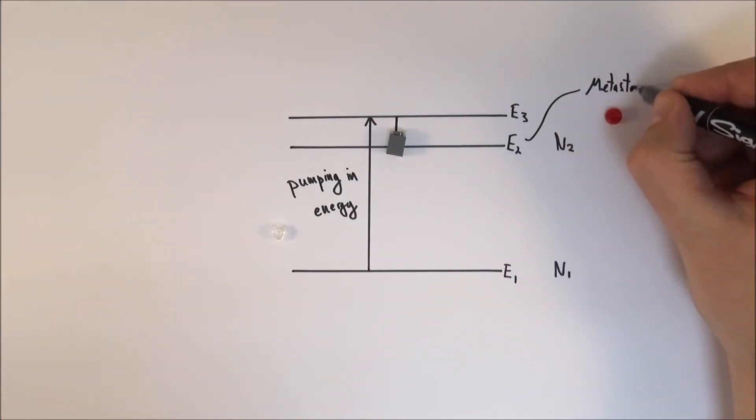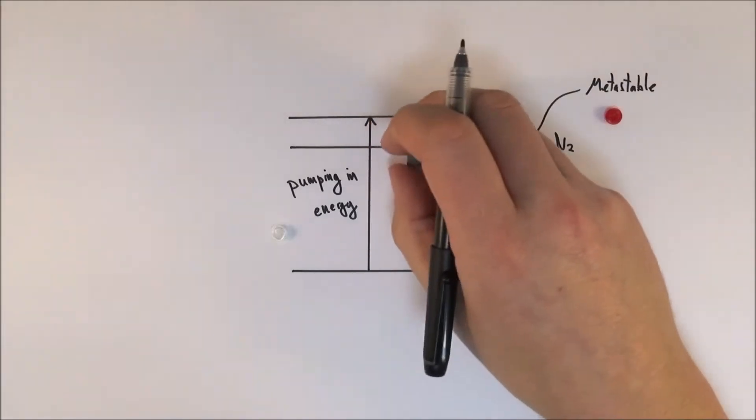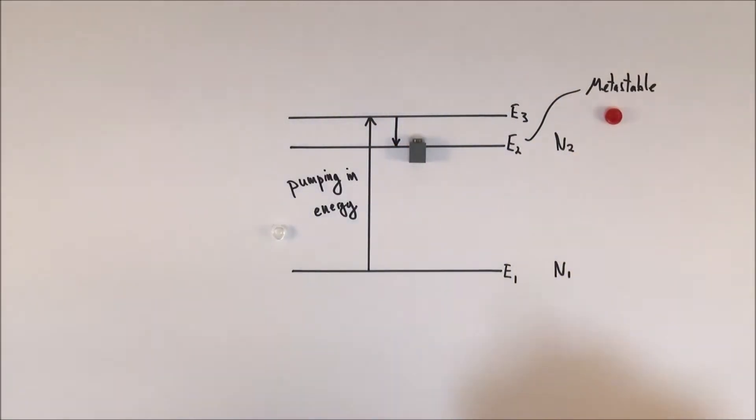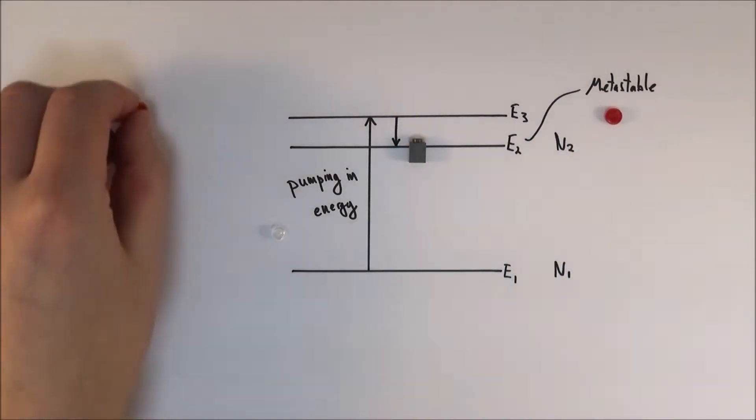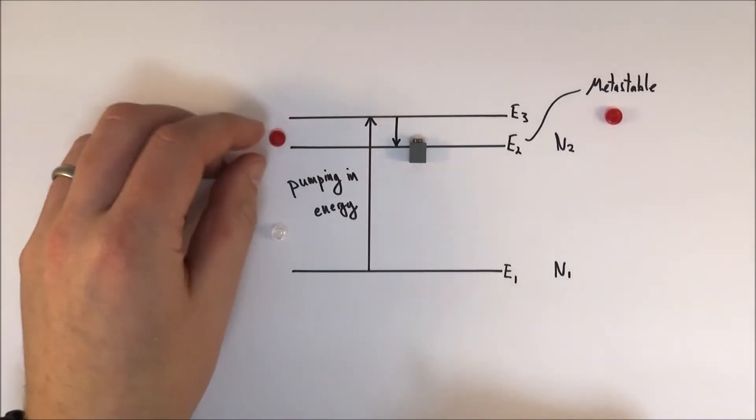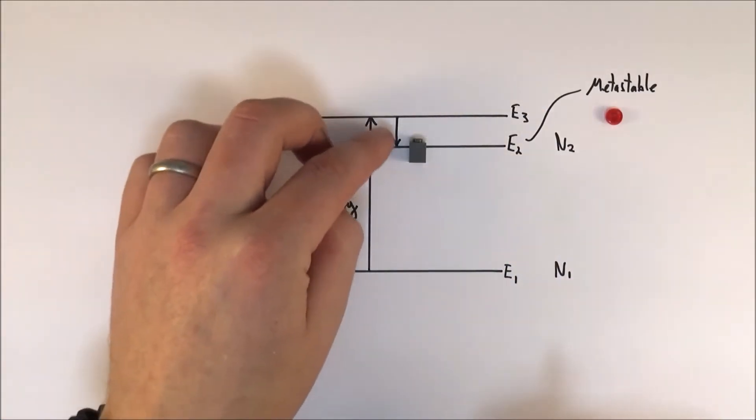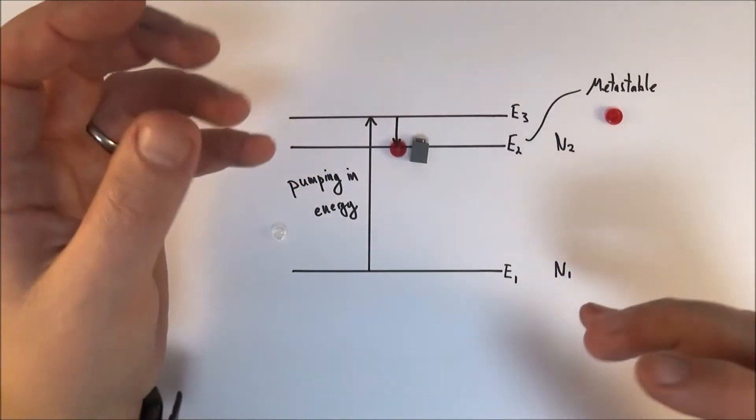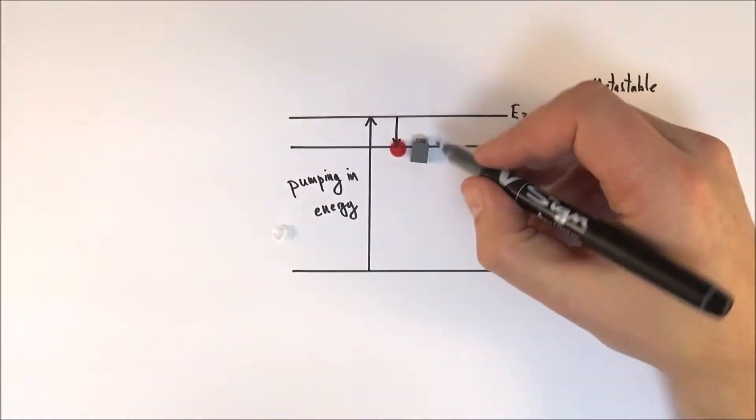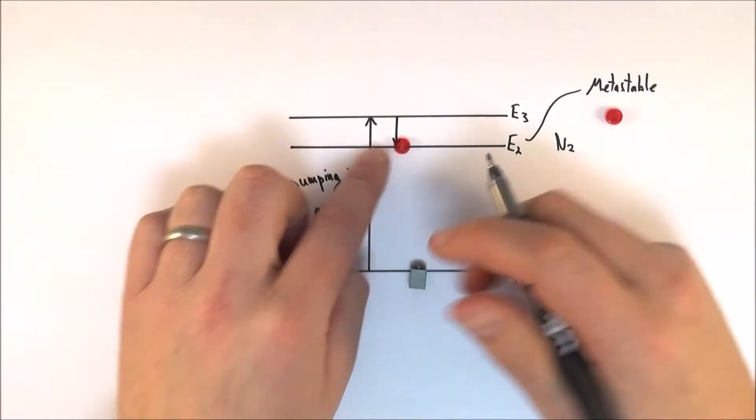So it doesn't really want to be there, but it can exist there for a short amount of time. Then what happens is you might have some other photons, perhaps a red light. And if this energy of this photon is the same as the energy gap here, the photon, as it moves by, causes a stimulated emission of radiation. This then drops back down to the ground state.